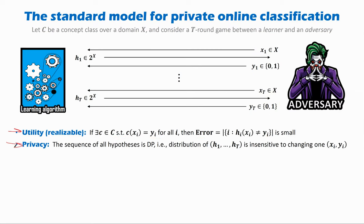What is the privacy requirement? The privacy requirement is that we want to ensure that the vector of all hypotheses we release throughout the execution is differentially private. What this means is that if you were to change one labeled example specified by the adversary, then that should not change by much the outcome distribution of all of the hypotheses we release.